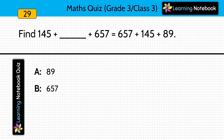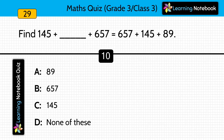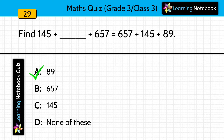Find: 145 plus dash plus 657 equals to 657 plus 145 plus 89. Here you have to fill in the blank. Answer is 89. If we write 89 on the left hand side, then it becomes equal to the right hand side.